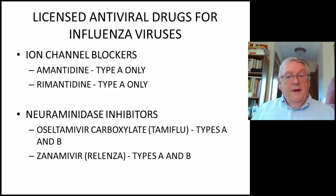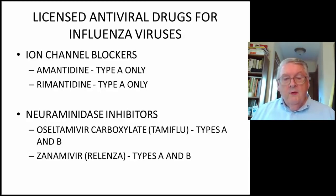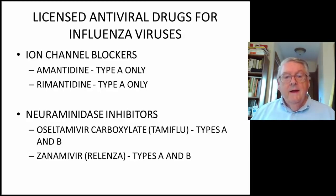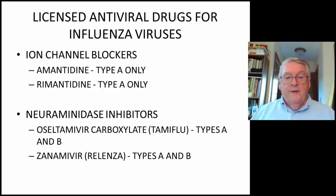There are a number of antivirals used to treat patients infected with influenza. Originally, they were ion channel blockers — remember those green ion channels in the model of the virus. Amantadine and rimantadine are very similar compounds, and they block that ion channel. They are only good for type A influenza virus, and currently they are not recommended because they generate resistant viruses very quickly.